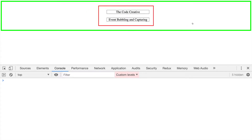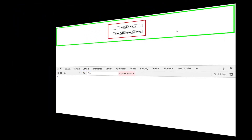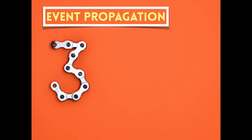Let's visualize this in the browser. We have the two LI elements nested in the UL element, and that UL element is nested inside of this container div. So if I set up one of these LIs to respond to a click event and the user clicks on one of them, we can also say that the user has clicked on the UL and on the enclosing container div. If I'm clicking on the child element I'm really clicking on all of the outer parent elements as well. And this brings us to the idea of event propagation.